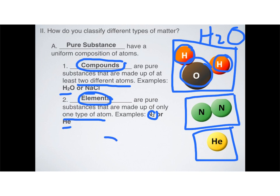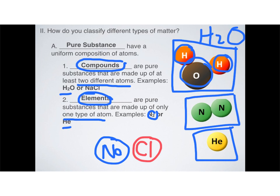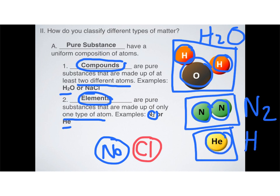The same thing can be said of salt: we have Na and Cl — it's always one Na and one Cl. Elements are also uniformly composited; it's just that they are only made up of one type of atom. For example, nitrogen is N2, which means it always has two nitrogens. Helium, on the other hand, is just an element in its pure state — monatomic — it only has one atom.